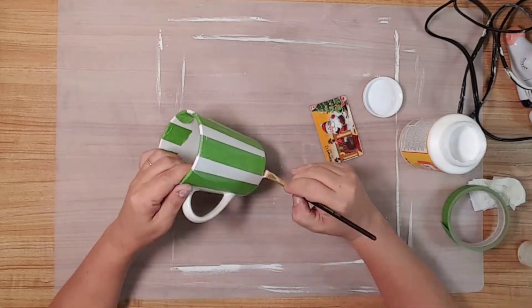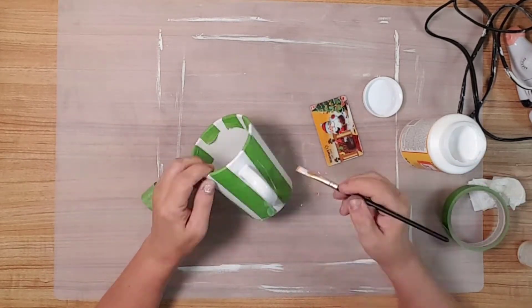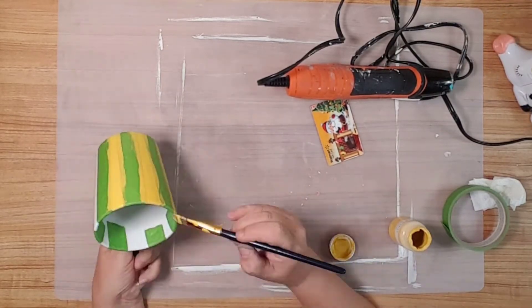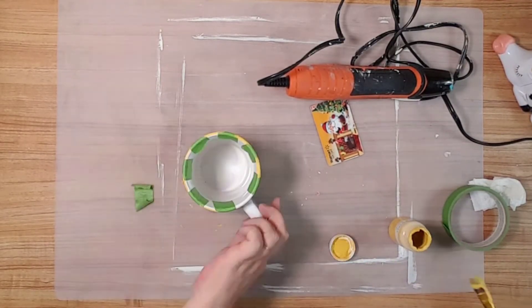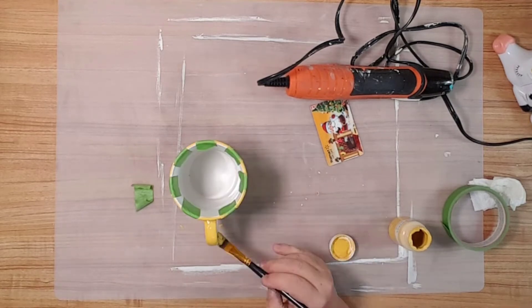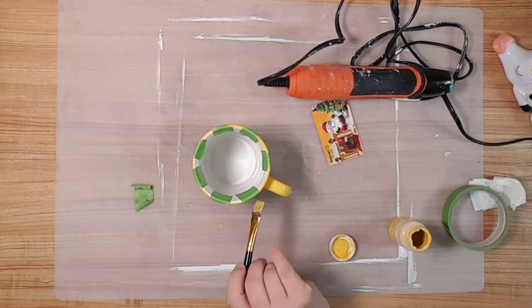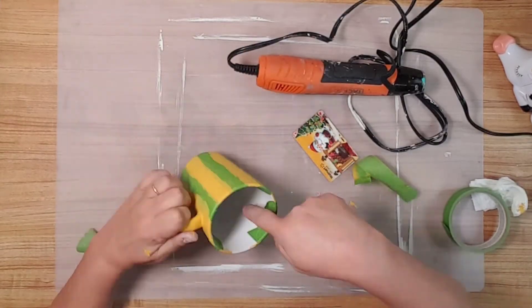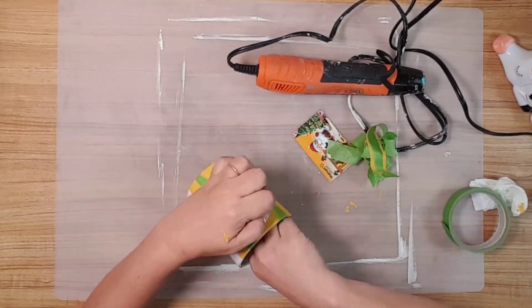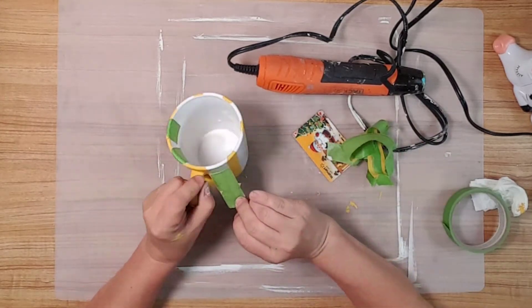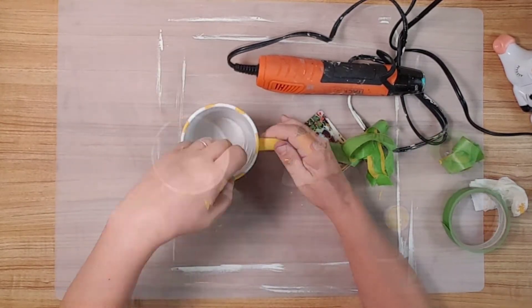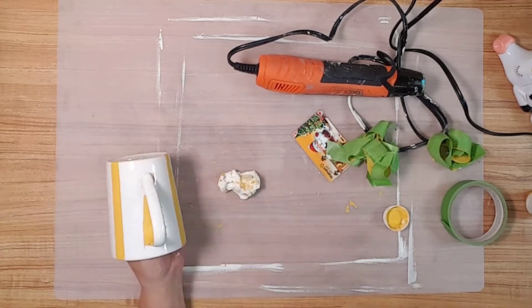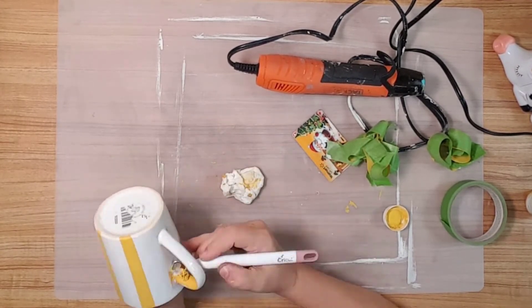I then applied a layer of Mod Podge. I used Waverly Maize chalk paint and painted the stripes onto the mug. Once the paint had dried, I removed the tape. I didn't like the way the paint looked on the handle, so I just scraped the paint off of the handle.